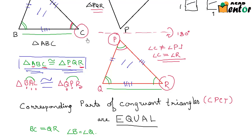Here we just saw that by observation these two triangles were looking identical and hence we said they were congruent. But how do we know for sure? We will talk about that in the next video. Bye.